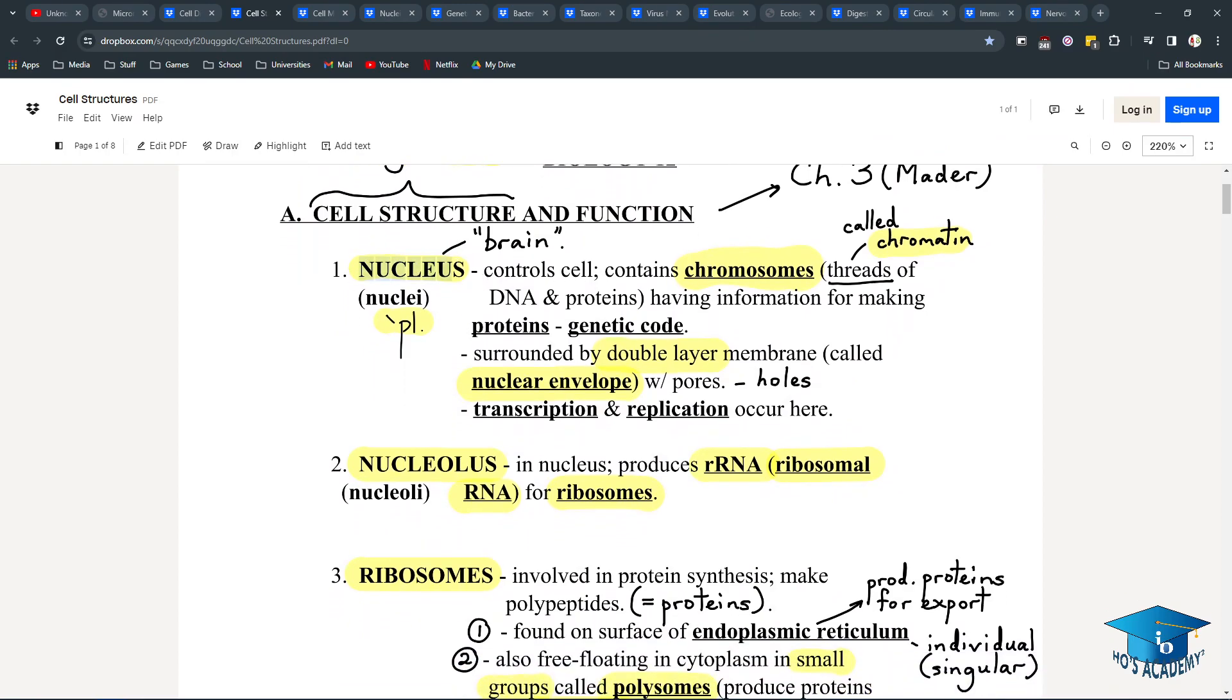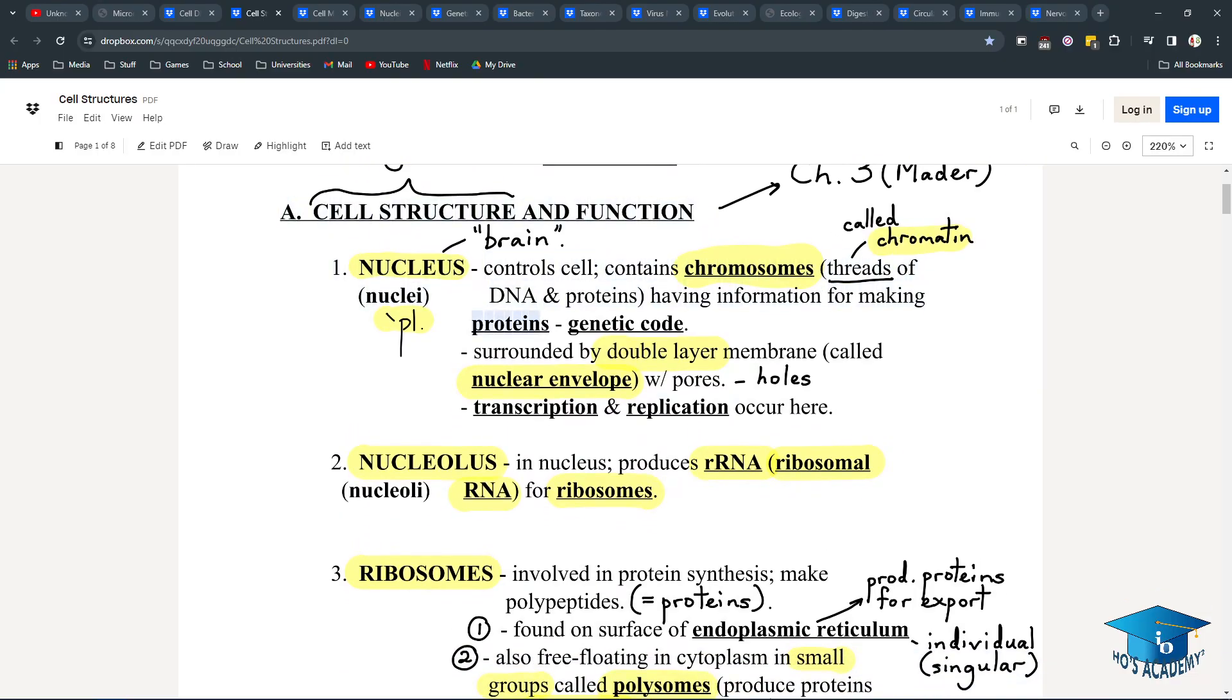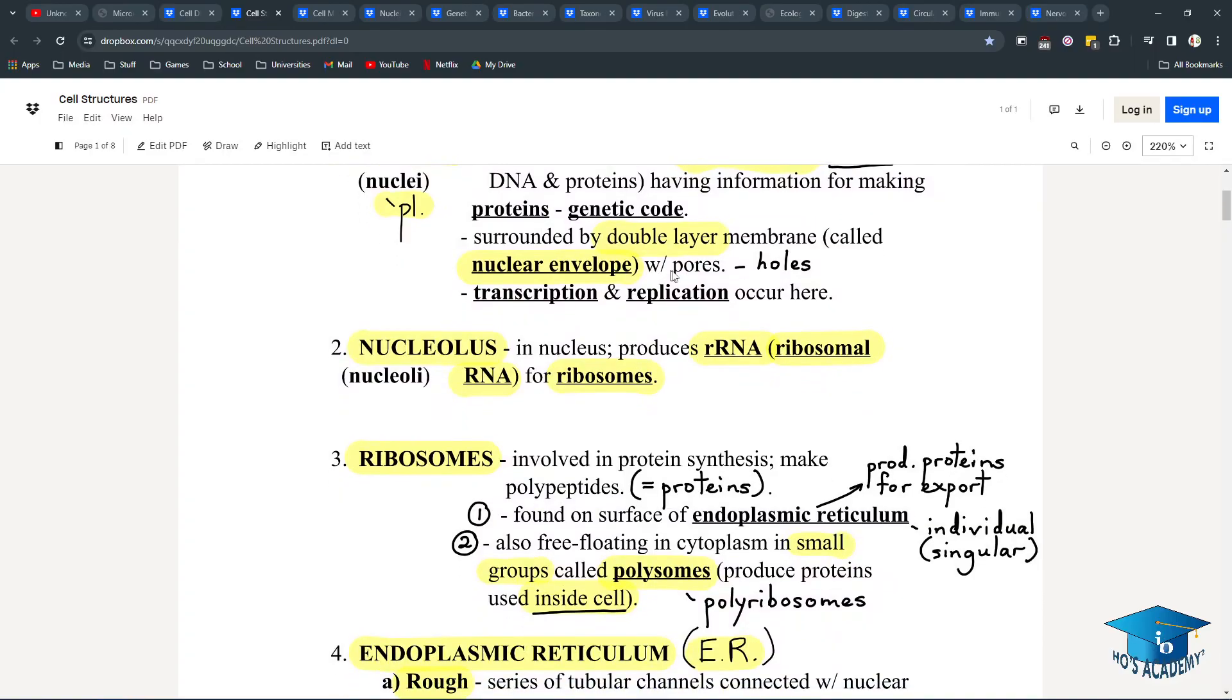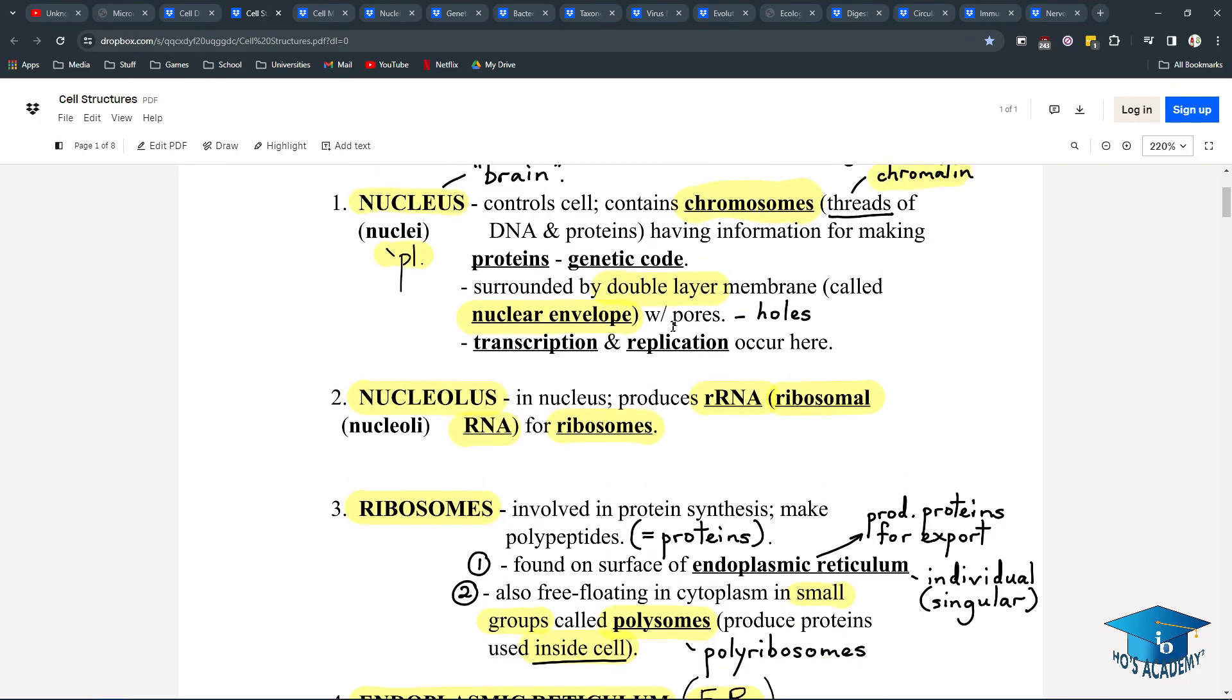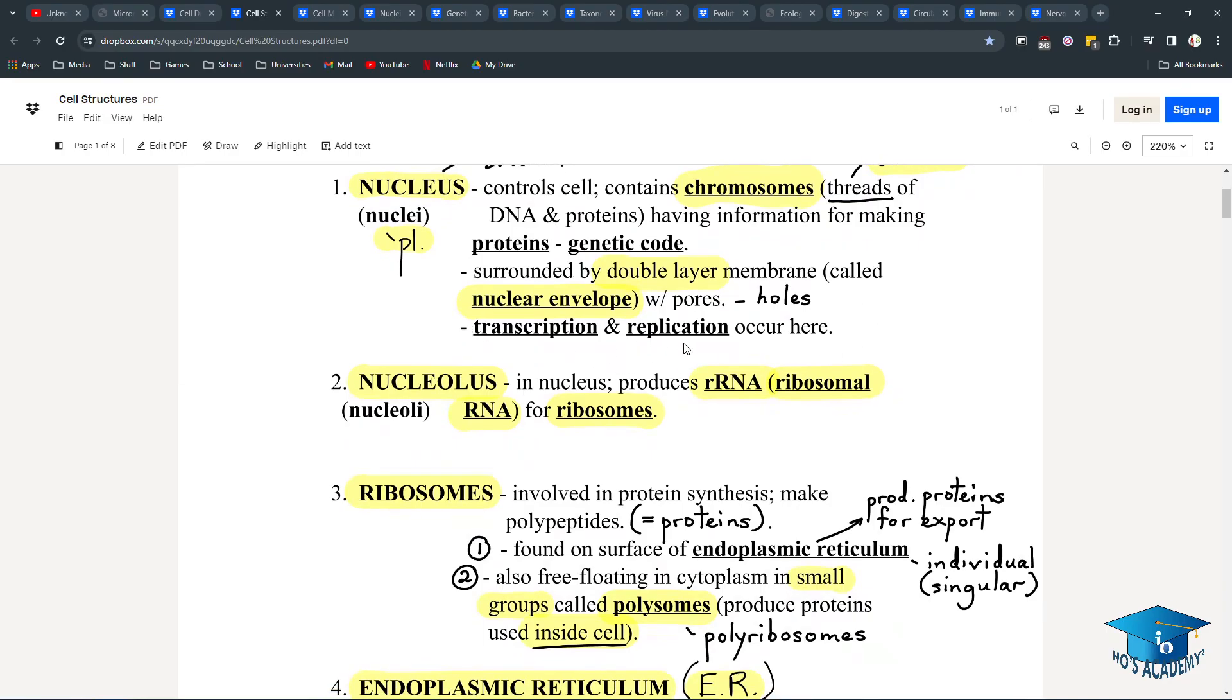The nucleus is kind of like the brain of the cell. In plural, it's nuclei. It controls the cell and contains all your genetic information in the form of chromosomes. And chromosomes are important because they code for proteins. Surrounded by a double-layer membrane called the nuclear envelope. You might remember this dissolves during one stage of mitosis. And there are pores to allow for transport and export. I think only messenger RNA is small enough to fit through these pores. Transcription and replication occur here.